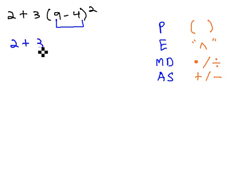When we do, we now have 2 plus 3, and 9 minus 4 is 5 squared.